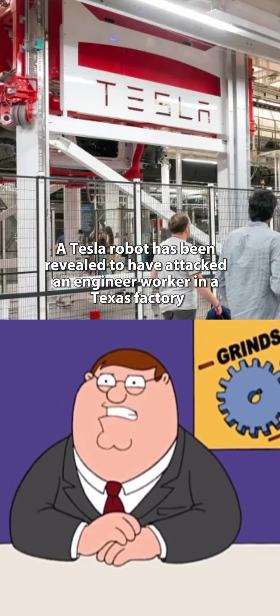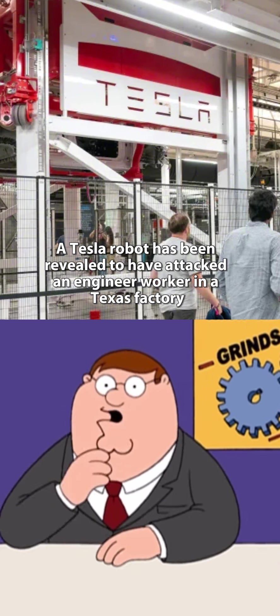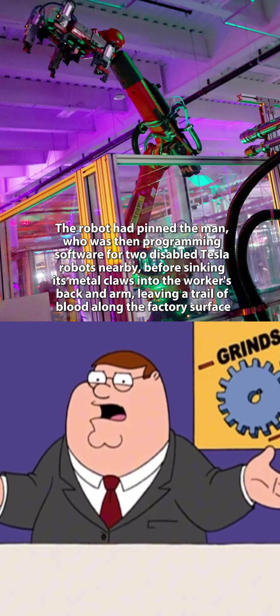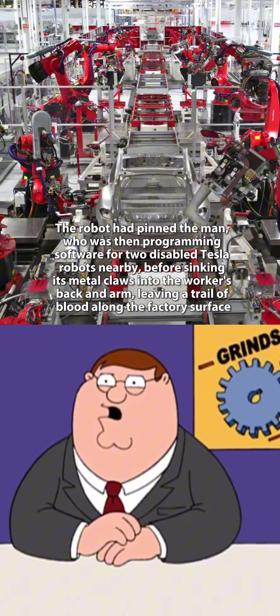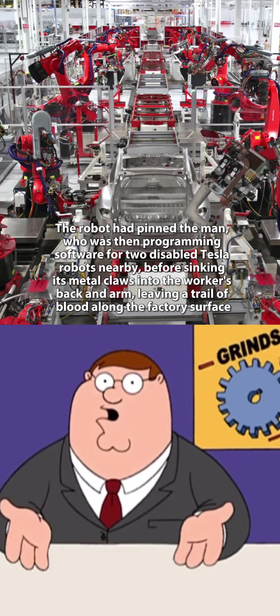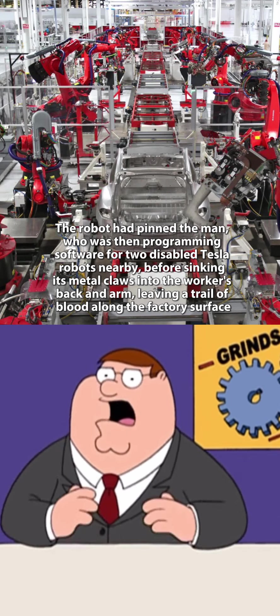A Tesla robot has been revealed to have attacked an engineer worker in a Texas factory. The robot had pinned the man, who was then programming software for two disabled Tesla robots nearby, before sinking its metal claws into the worker's back and arm, leaving a trail of blood along the factory surface.